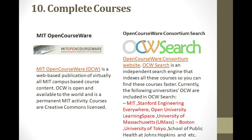OpenCourseWare Consortium Search is an independent search engine that indexes all courseware so you can find courses faster. Currently included universities are MIT, Stanford Engineering Everywhere, Open University Learning Space, University of Massachusetts Boston, University of Tokyo, School of Public Health at Johns Hopkins, and others.